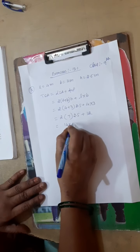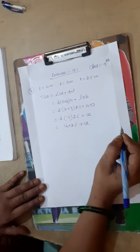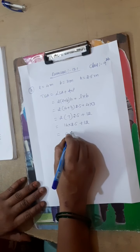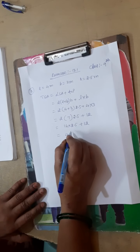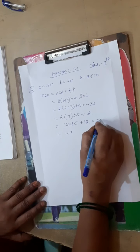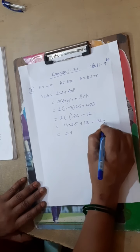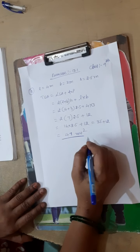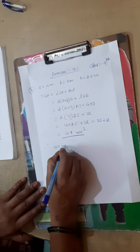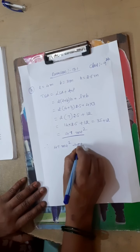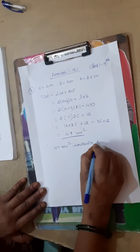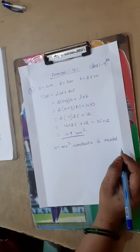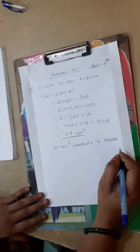So: 2 into (4 plus 3) into 2.5 plus 4 into 3 equals 2 into 7 into 2.5 plus 12, which gives 35 plus 12, equals 47 metre square. Therefore, 47 metre square of tarpaulin is needed to make the temporary shelter.